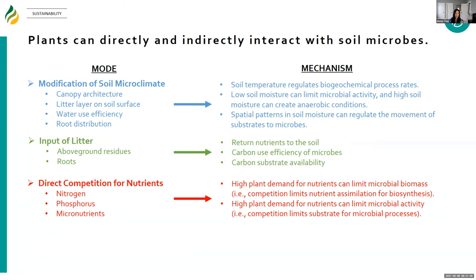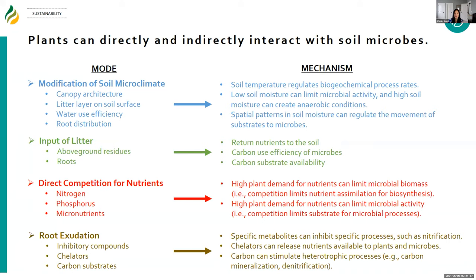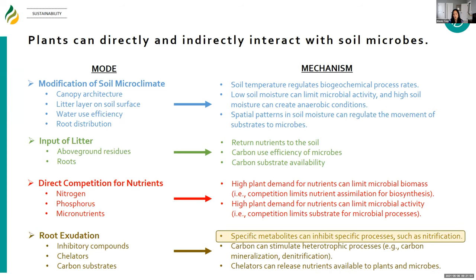This litter also represents a carbon substrate to fuel heterotrophic microbial activity. There is direct competition between plants and microbes for different nutrients. Root exudation of specific compounds can inhibit particular microbial processes — something that's challenging to study but a good challenge for my group. Some compounds are chelators that release nutrients for the plants, but those nutrients can also be taken up by microbes. For the rest of my talk, I'll focus on specific metabolites that can inhibit specific processes such as nitrification.